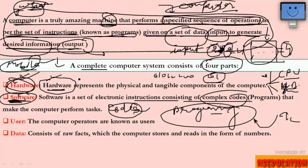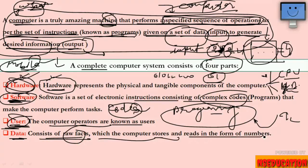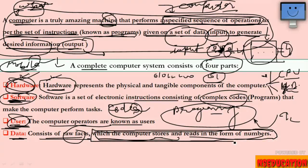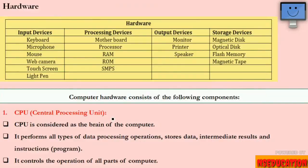Next is the user. The person who operates the computer is called the user. Next is data. Data consists of some raw facts which the computer stores and reads in the form of numbers. Whatever the computer stores and reads is always in the form of numbers.